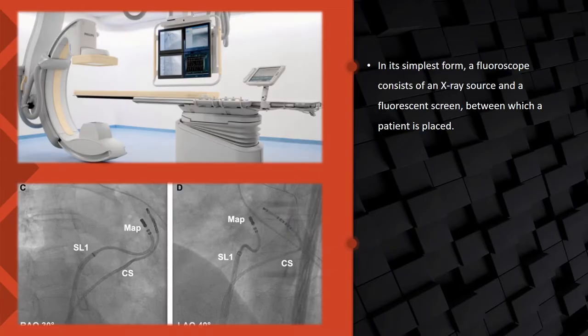In its simplest form, a fluoroscope consists of an x-ray source and fluorescence screen, between which a patient is placed. Fluoroscopy is similar to radiography and x-ray computed tomography in that it generates images using x-rays. The key difference is that radiography fixes static images on film, whereas fluoroscopy provides live moving pictures that were not stored.